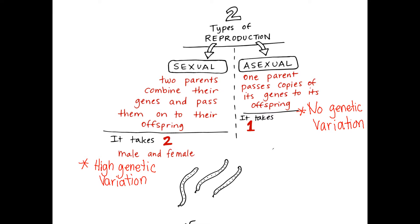With asexual reproduction, you only have one parent. This happens in unicellular organisms like an amoeba or bacteria. The one parent cell doubles itself — it copies all of its organelles — and then it splits. The offspring looks exactly like the parent cell because it just copied itself. One parent passes on copies of its genes to its offspring, and we call those offspring daughter cells. There is no genetic variation because they just copy themselves and split.